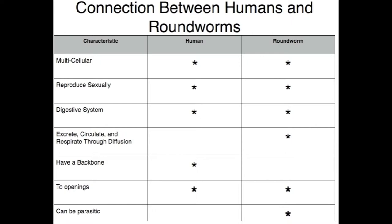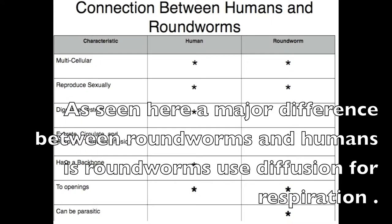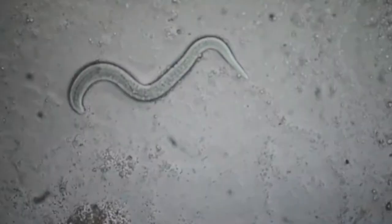A major difference between humans and roundworms is that roundworms use diffusion for respiration, circulation, and excretion.